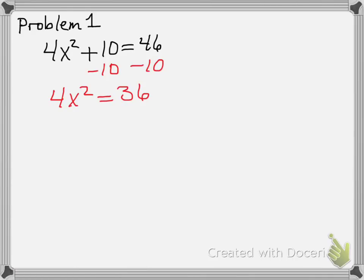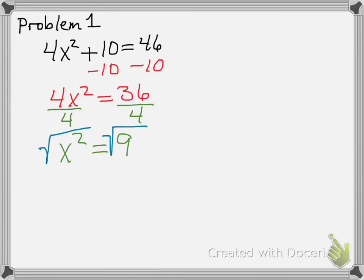Next step — what do you think we're going to do here? We're going to divide by 4 on both sides. That leaves us with x squared is equal to 9. Now I've got x squared equals 9. To find x, I'm going to take the square root of x squared and of 9. The square root of x squared is x, and that equals the square root of 9, which is 3.